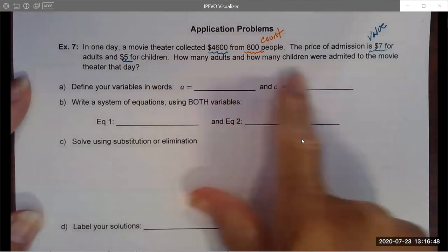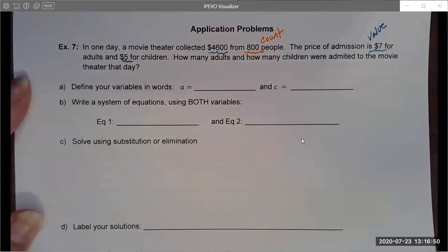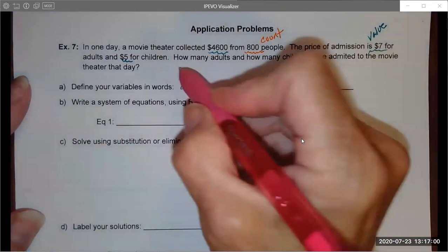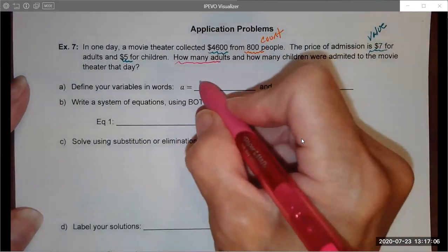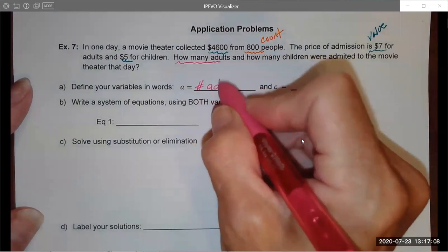Often we can figure out what our variable should be by looking at the question the problem is asking. If I look at the question, it's asking how many adults. So that is obviously a variable. If I knew I wouldn't be asking, so I'm going to call that A for adults, number of adults.